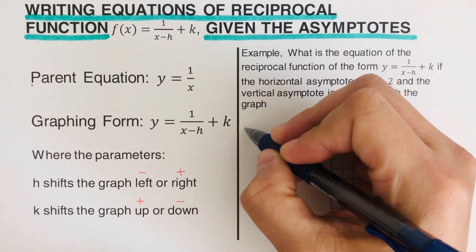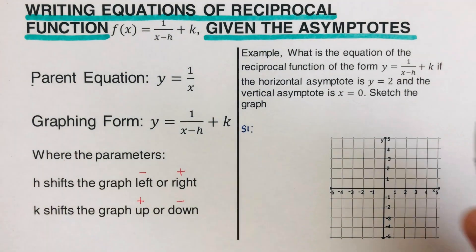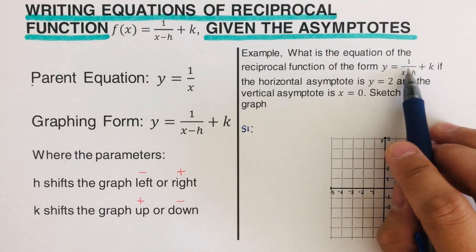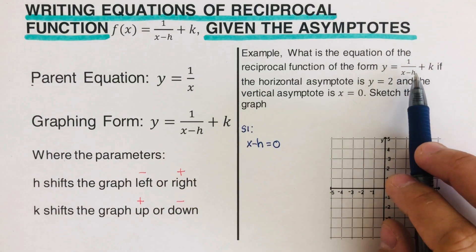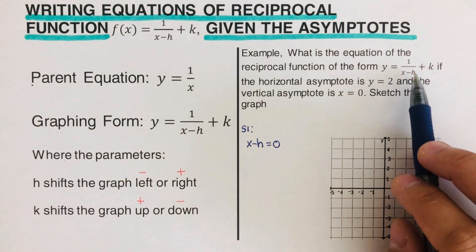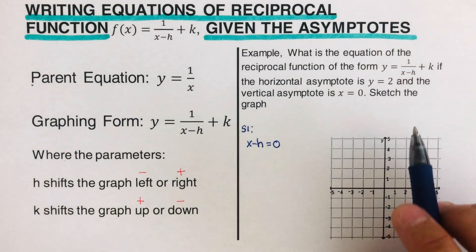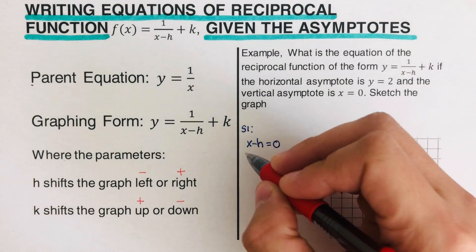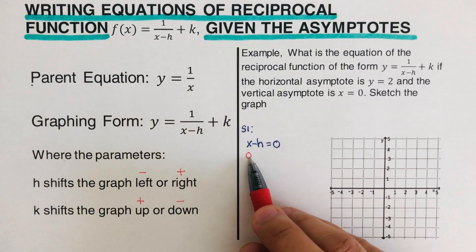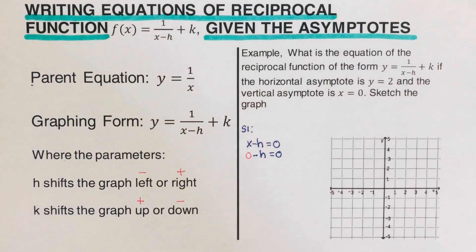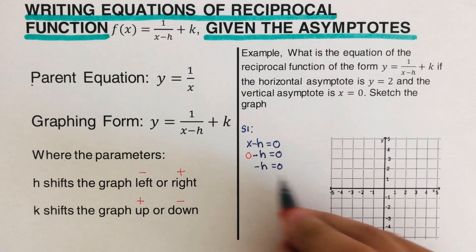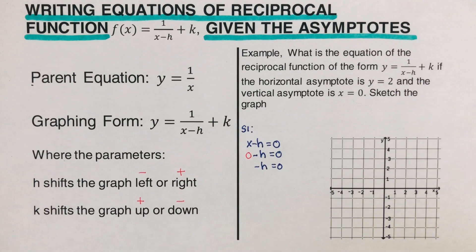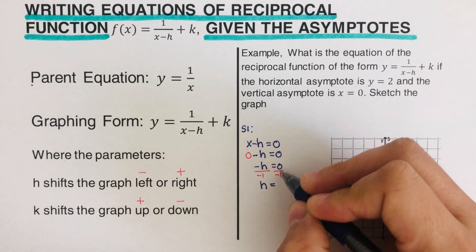Step 1: Solve for h and k. To solve for h, we set the denominator equal to zero: x - h = 0. The asymptote exists where the denominator is zero because 1/0 is undefined. We plug in the x-value from the vertical asymptote, which is 0: so 0 - h = 0, giving us negative h = 0, and dividing by negative 1 gives h = 0.